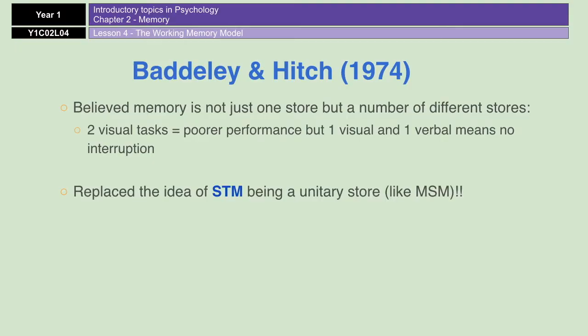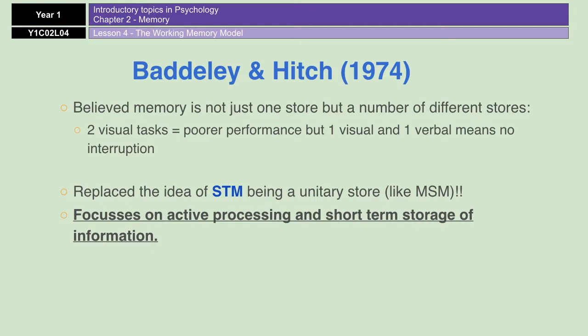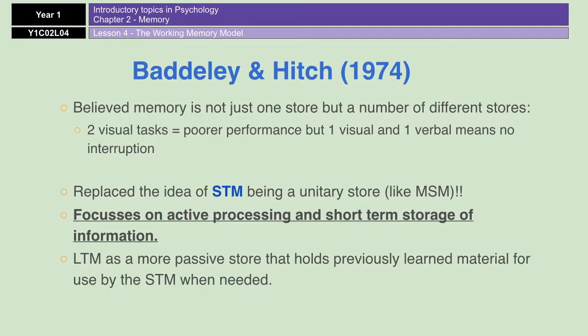The working memory model replaced the idea of short-term memory as being a unitary store — just one store where everything is held — and replaced it with the idea of there being multiple stores that all work on active processing. The focus is very much on active processing and also on the short-term storage of information. Long-term memory is seen more as a passive store that holds previously learned material, but it's really just a staging area where information can be retrieved by short-term memory as and when it's needed.